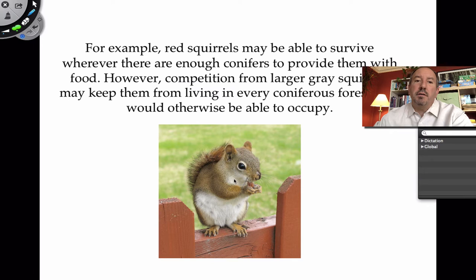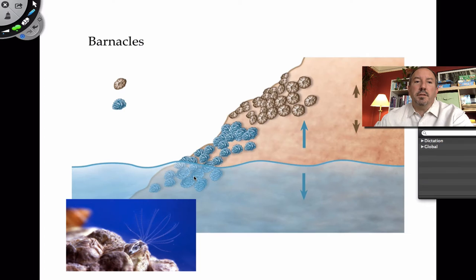Back over here with the squirrel - this is a little tiny red squirrel. It turns out the red squirrels may be able to survive where there's enough conifer cones to provide food. But when there are large gray squirrels, which most of us are familiar with, it prevents the red squirrel from living in a particular area because it's out-competing it. They have to avoid each other.